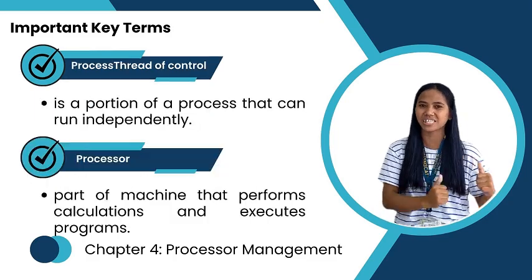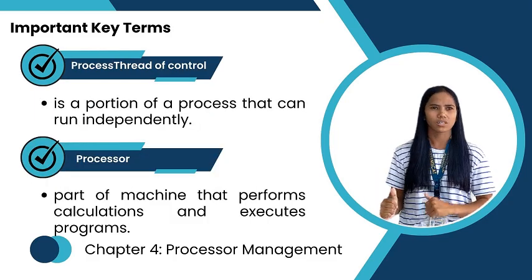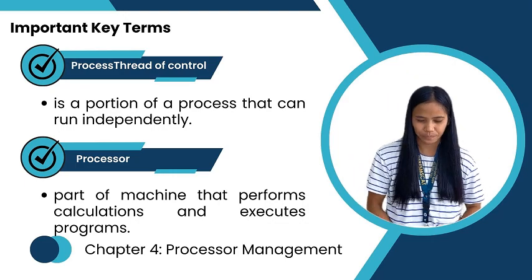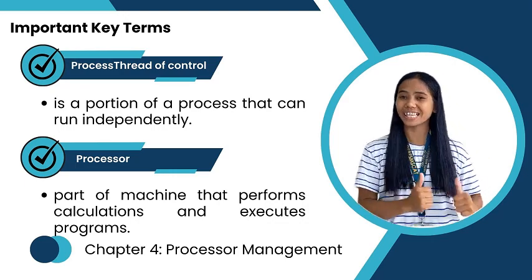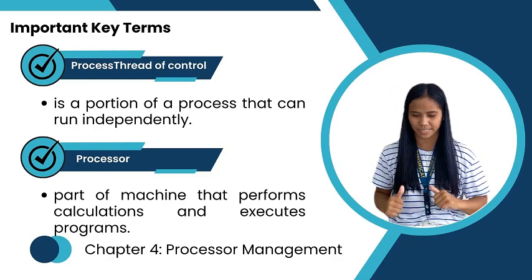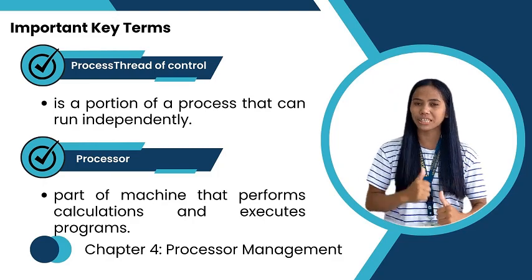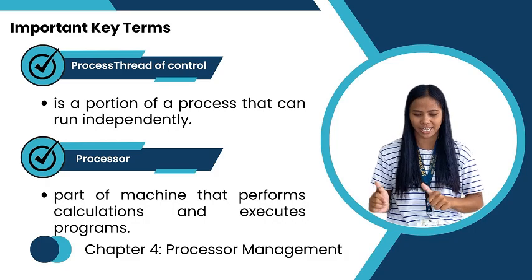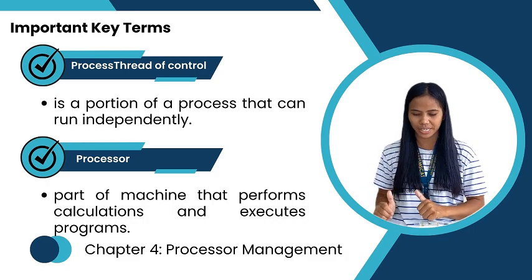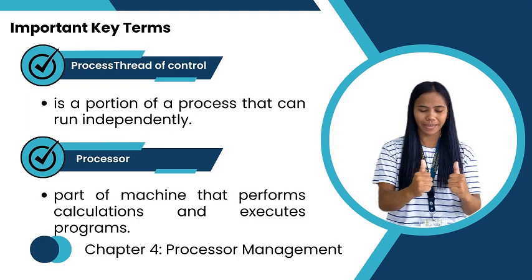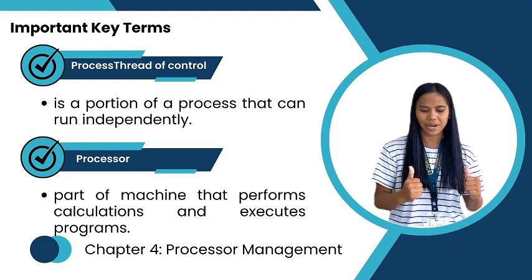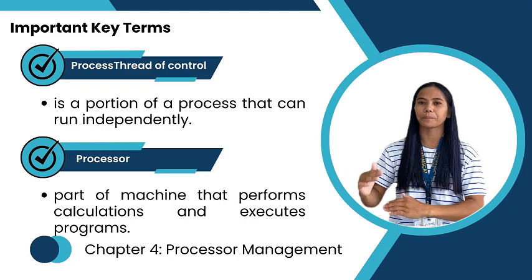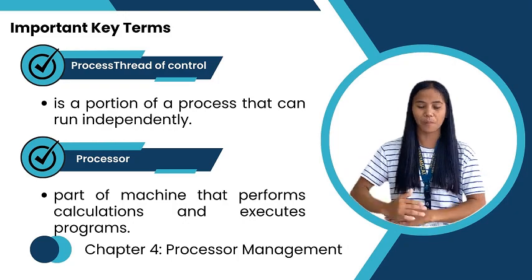Next is threads of control, or threads. Threads are the smallest unit of execution within a process. A process can have multiple threads, and these threads share the same resources like memory space, but run independently. Threads within a process can communicate more easily than separate processes.